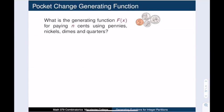Our motivating example: what is the generating function for paying n cents using pennies, nickels, dimes, and quarters? We will break this problem into four subproblems and find the generating function for each. If we want to pay n cents in pennies, then we can always do this, and there is one way to do so for every possible size n.